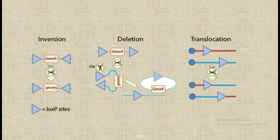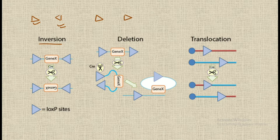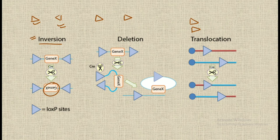Let's quickly recall: in inversion, the loxP sites face towards each other; in deletion, the loxP sites are in a continuous direction; and in translocation, the loxP sites are situated at opposite strands. In inversion the Cre recombinase inverts the gene; in deletion it deletes the gene; and in translocation it translocates parts of the strands to the opposite strands.